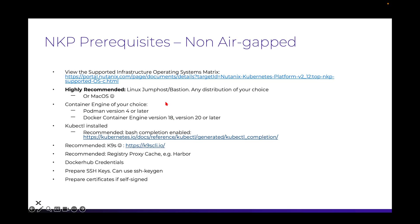Obviously we need a container engine. This allows us to basically run the bootstrap image on the jump host, Bastion, or on your local device — your local Mac device. The container engine options include things like Podman or Docker. In the demo we'll take a look at how to install both of these.